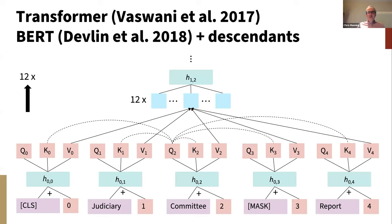However, anyone who knows anything about natural language processing in the last three years knows that those models are nowhere to be seen now. Rather, there has been the development of a new class of transformer models, of which BERT is the most famous example, but it now has many friends and descendants. These very large pre-trained transformer models are trained by a very simple self-supervision objective where you mask out a few words — if you mask out a word between 'judiciary committee' and 'report' — and the model tries to predict those words.